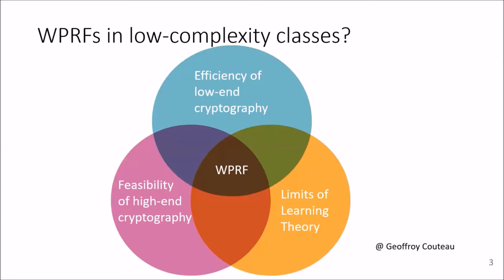The question we consider in this work is, what is the lowest complexity class we can hope to construct weak pseudorandom functions in? This question is at the intersection of many interesting areas. First, if you can have a weak PRF in a low complexity class, it typically gives you efficient symmetric key primitives, for example, highly parallelizable stream ciphers and simple message authentication codes.